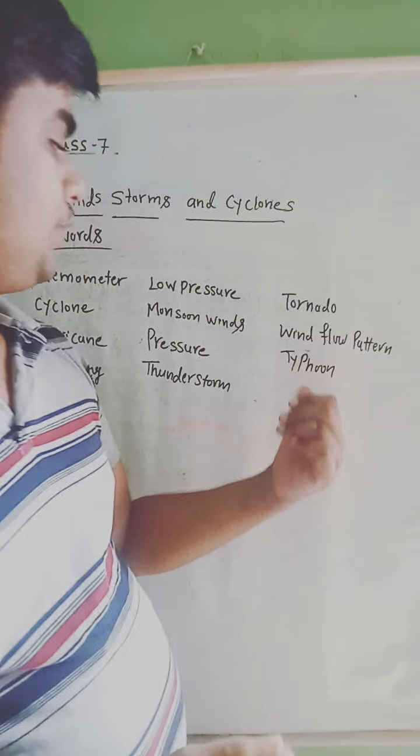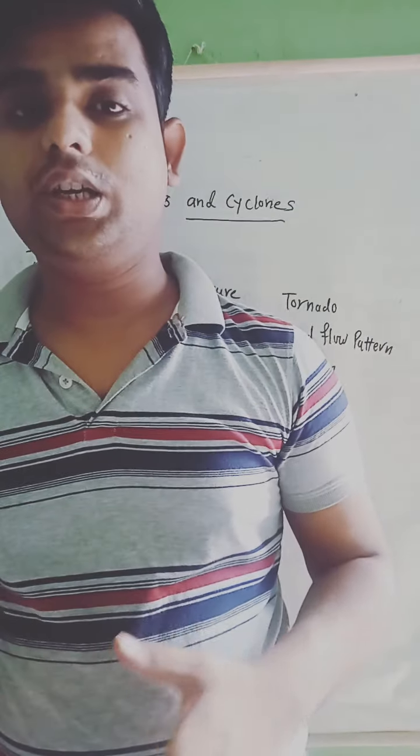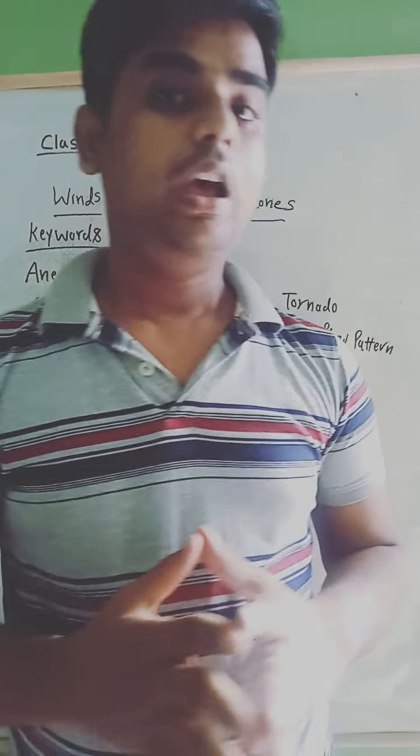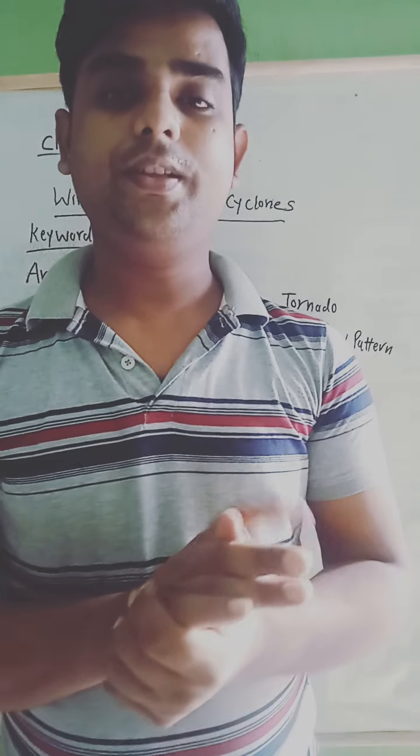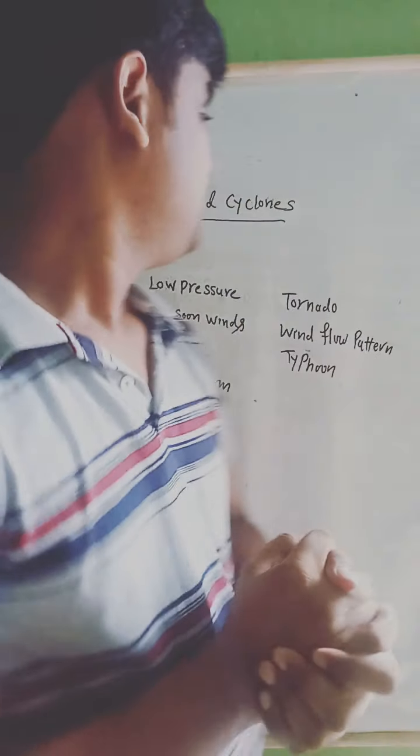The next keyword is typhoon. What is typhoon? Typhoon is a type of cyclone which occurs due to the speed of winds. It is known as typhoon in Japan and Philippines.